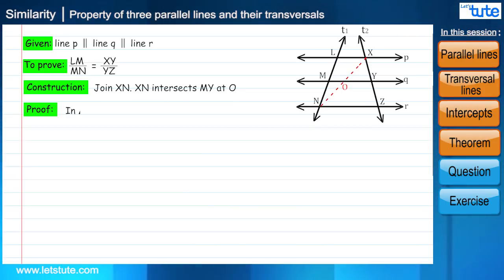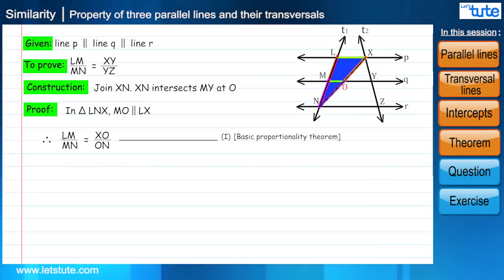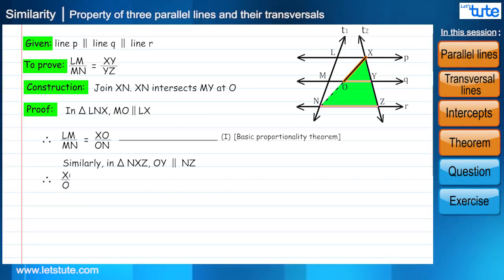In triangle LNX, MO is parallel to LX. Therefore, LM divided by MN equal to XO divided by ON. This would be my first equation. Similarly, in triangle NXZ, OY is parallel to NZ. Therefore, XO divided by ON equal to XY divided by YZ. This would be equation 2.